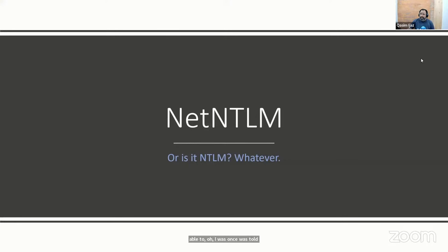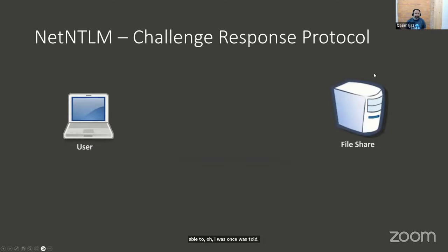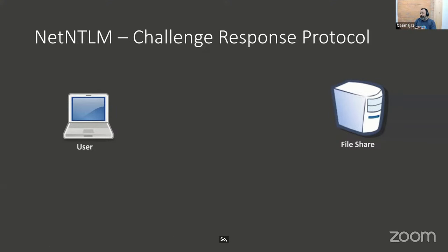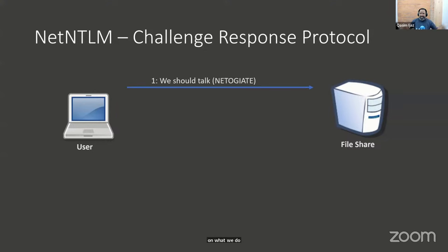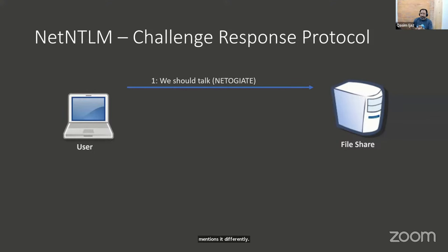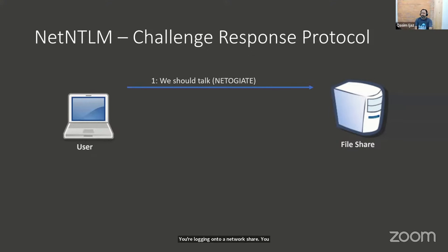You are a user or a workstation — a laptop — wanting to access a file share. The file share doesn't know you; you have not been authenticated. So you simply say, 'can we talk?' The negotiate message is the first message the user sends to the file share: we need to communicate. Throughout the slides, we're trying to use language that works for everybody, not going too deep into the technical bits on purpose. The focus is to understand at a high level what these things are.